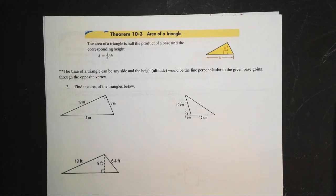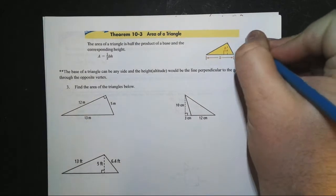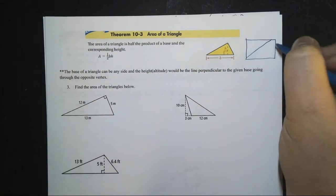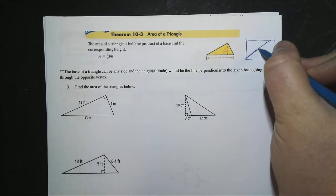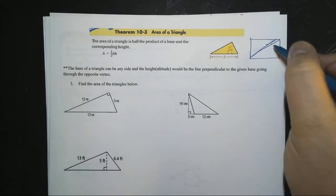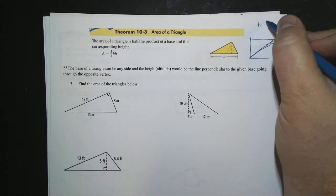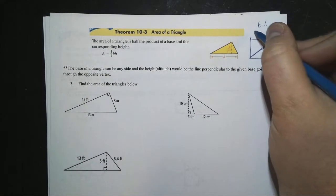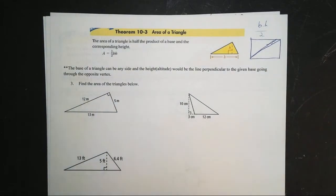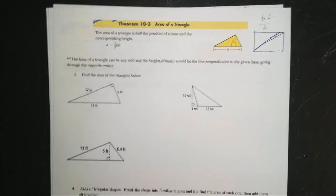For triangles, the area formula is one-half the product of the base and height. This comes from the fact that if you take a rectangle and cut it in half diagonally, you get two triangles. So the area of a triangle is one-half base times height — it's one-half of the rectangle formula.